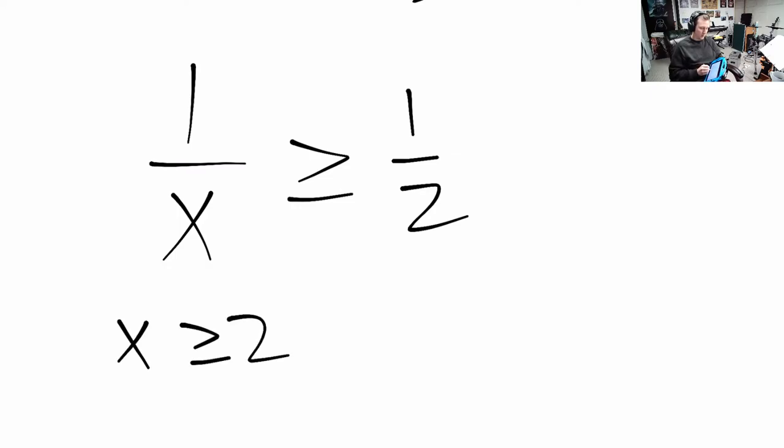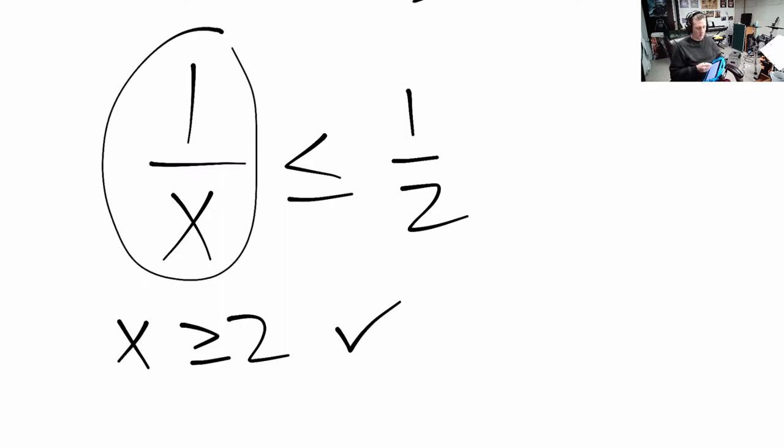Picking any number bigger than 2 works because—I've got it wrong, don't I? I've got it reversed. It works because this fraction is going to be smaller than 1/2. If we pick a bigger denominator, we've got ourselves a smaller fraction.